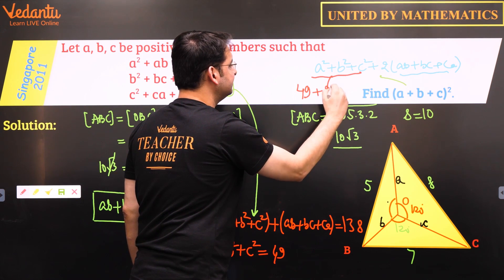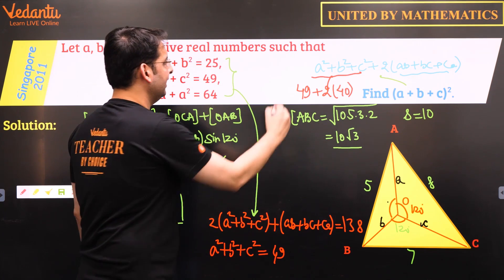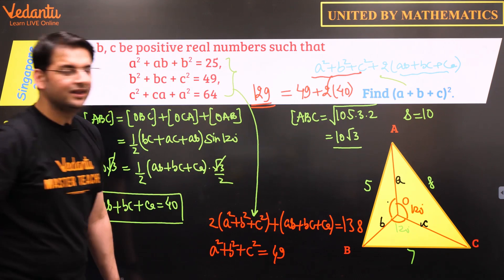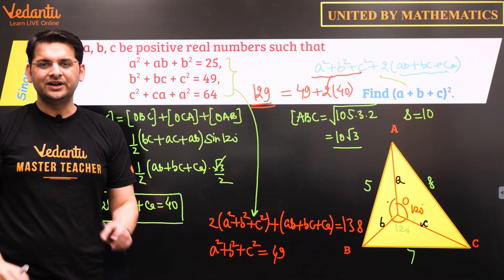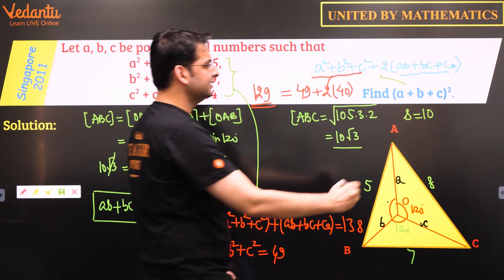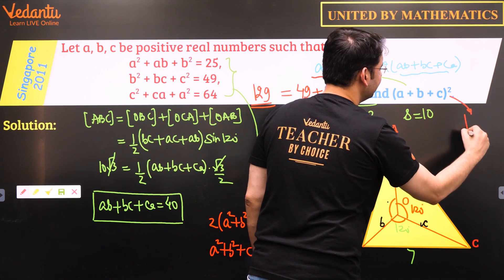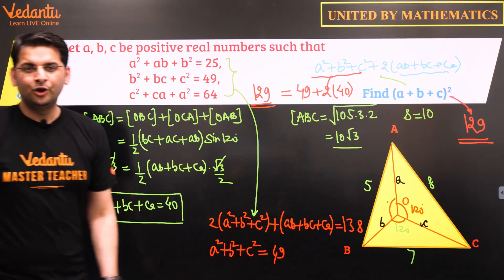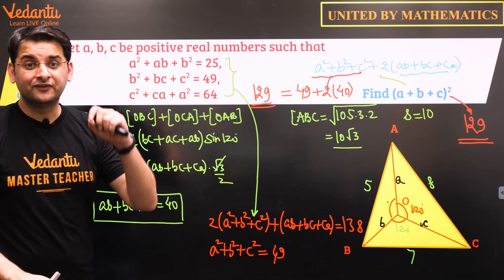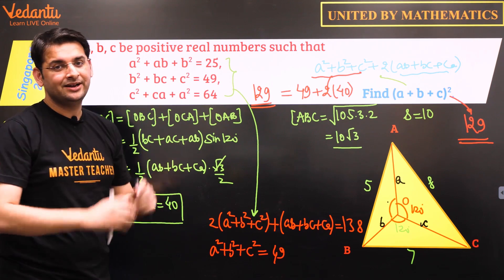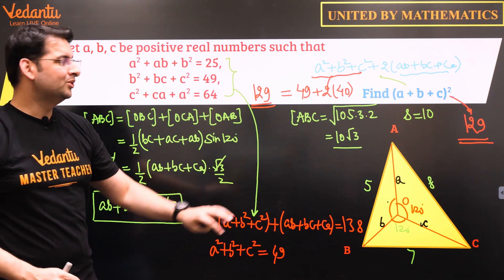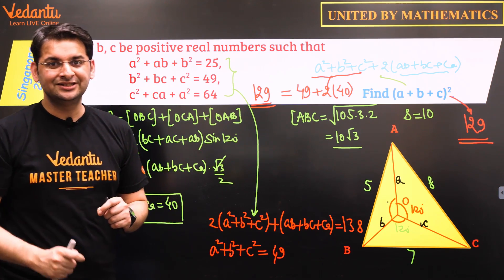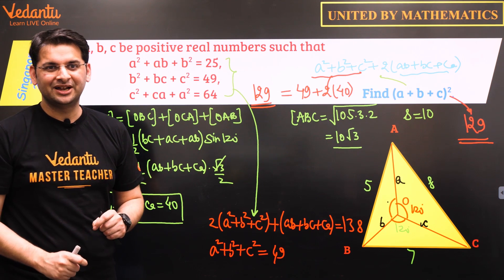Therefore, (A+B+C)² = 49 + 2×40 = 129, which is the answer. I hope you've enjoyed this question and appreciated how we converted this algebraic system of equations into geometry. Please follow this channel — take care!